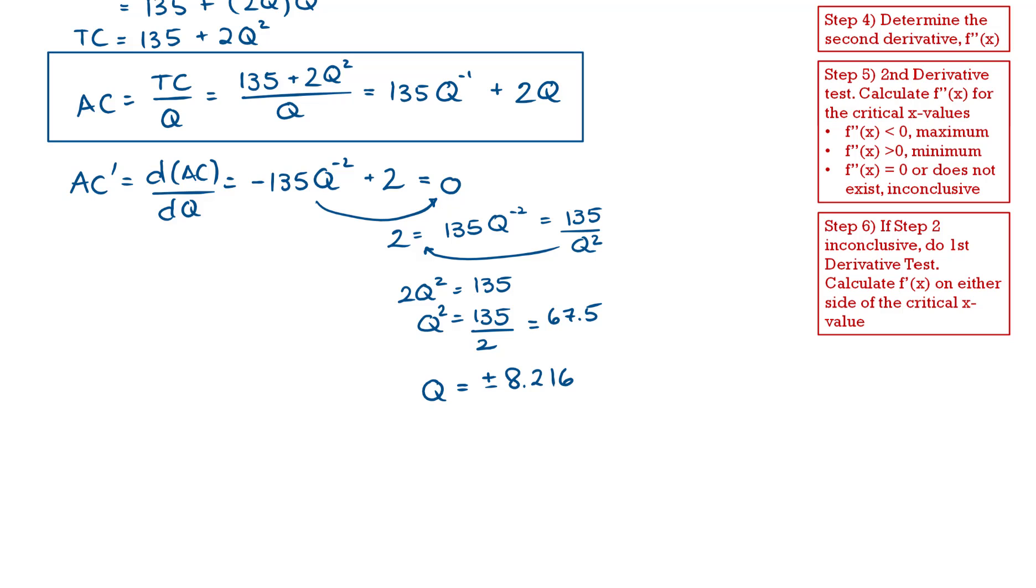Now in this problem, I have both a plus and a minus option. However, because of the nature of quantity, because you would only be producing a positive quantity, we're going to ignore the negative value because it doesn't apply. And we're going to have Q is equal to 8.216.